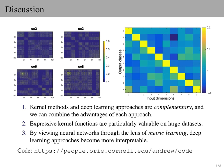Finally, many machine learning algorithms are implicitly learning a similarity metric across data instances. By viewing neural networks explicitly through the lens of metric learning, we gain interpretability. Code is available, and I look forward to seeing you at NIPS.